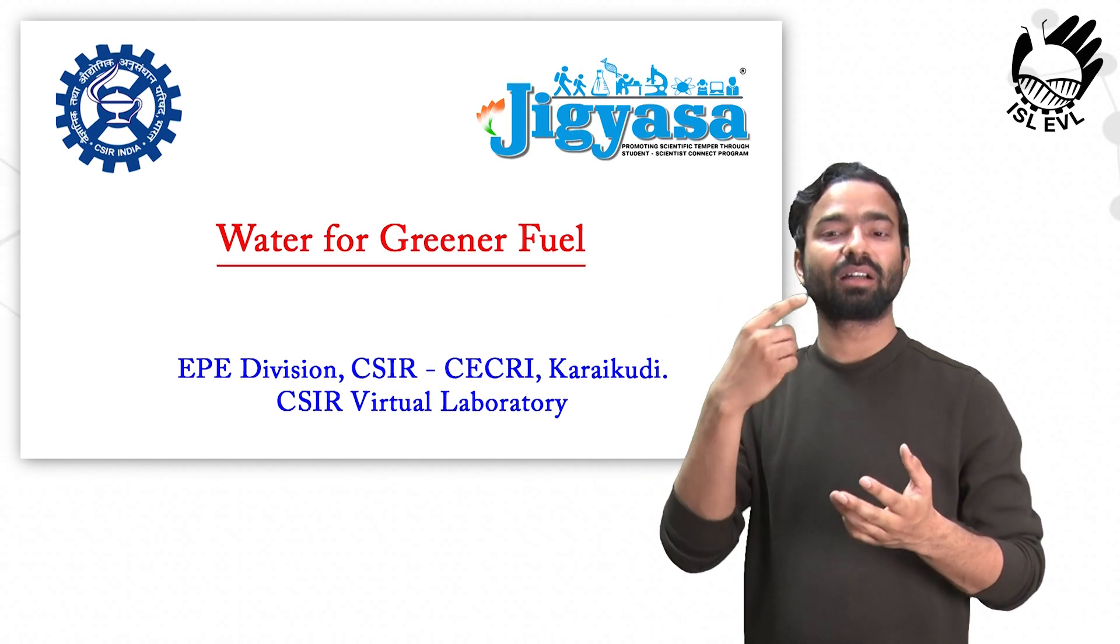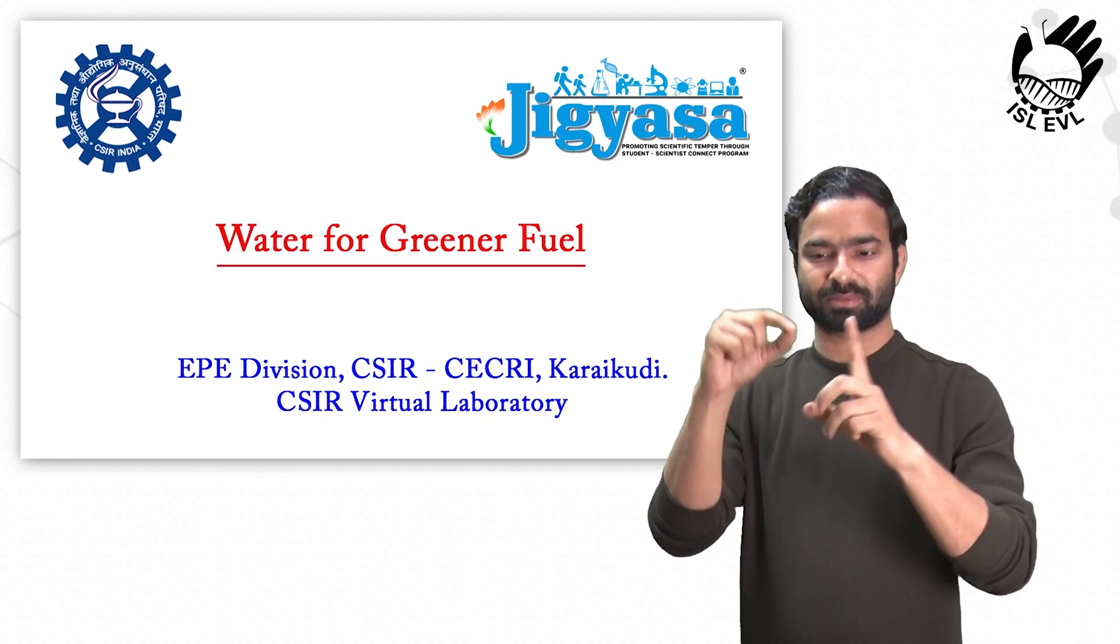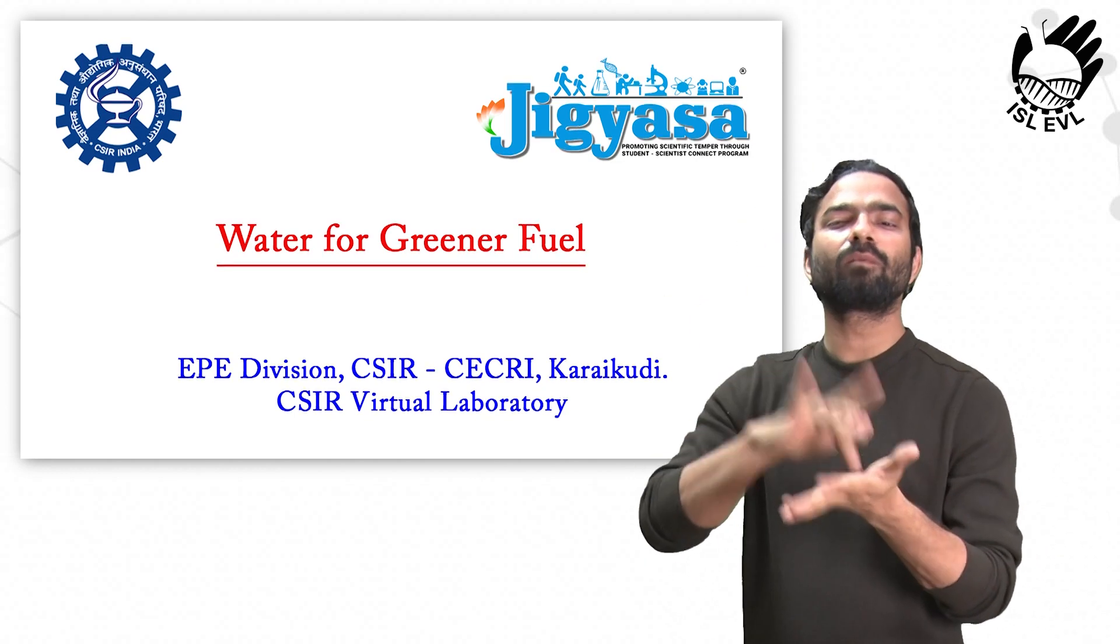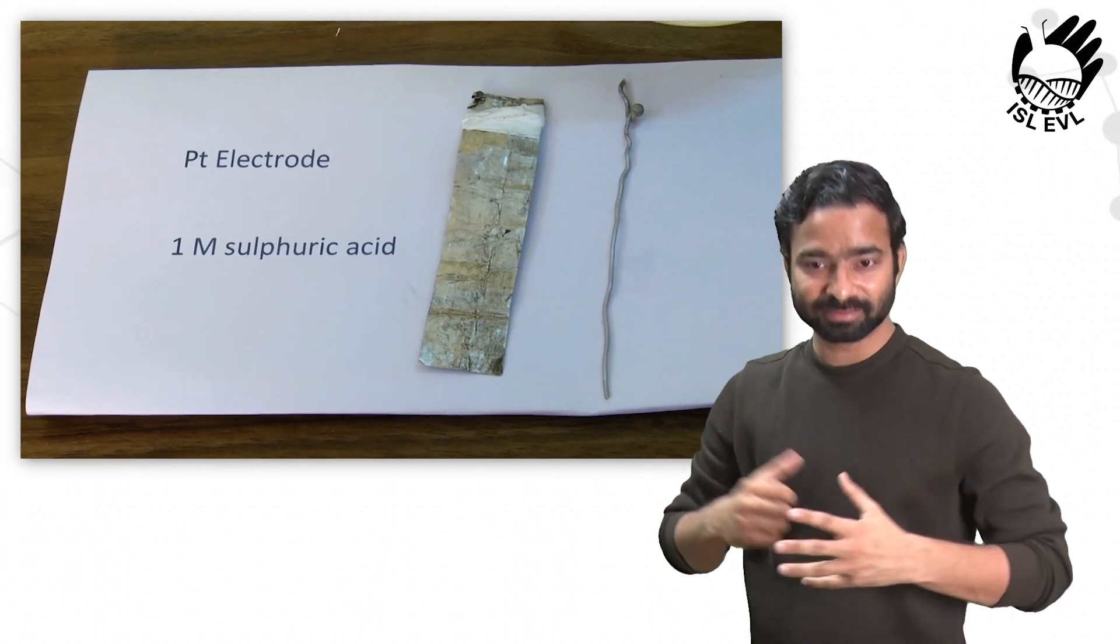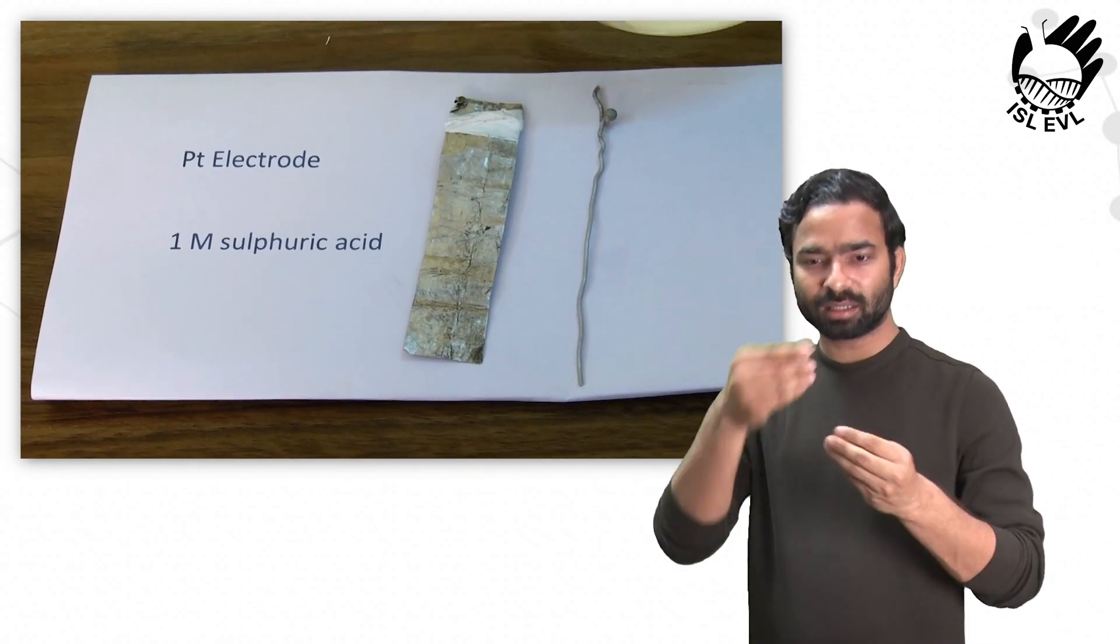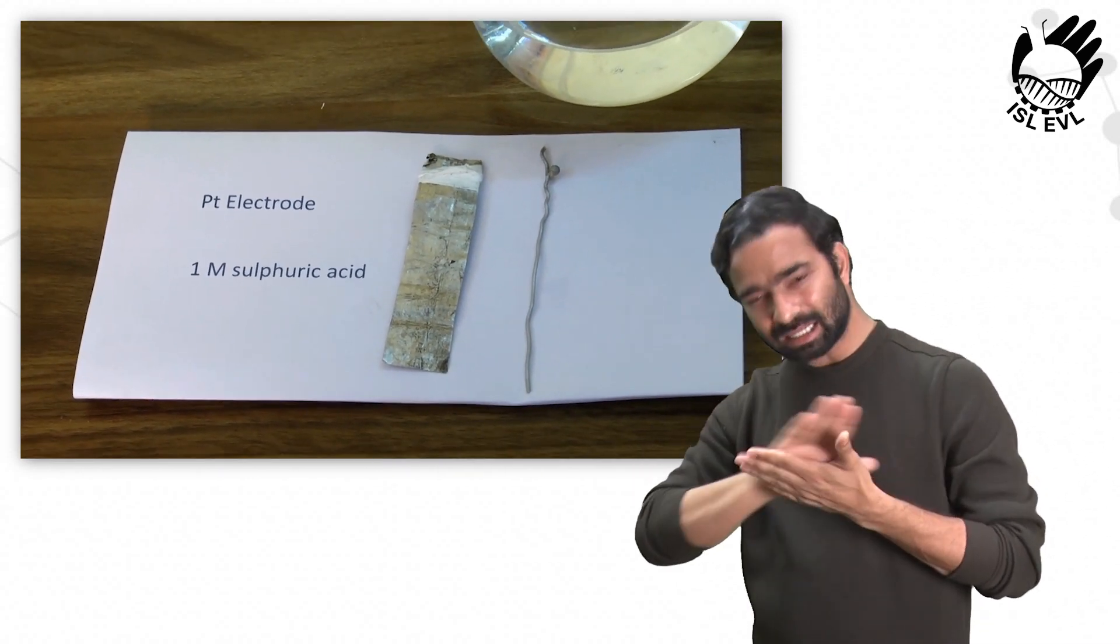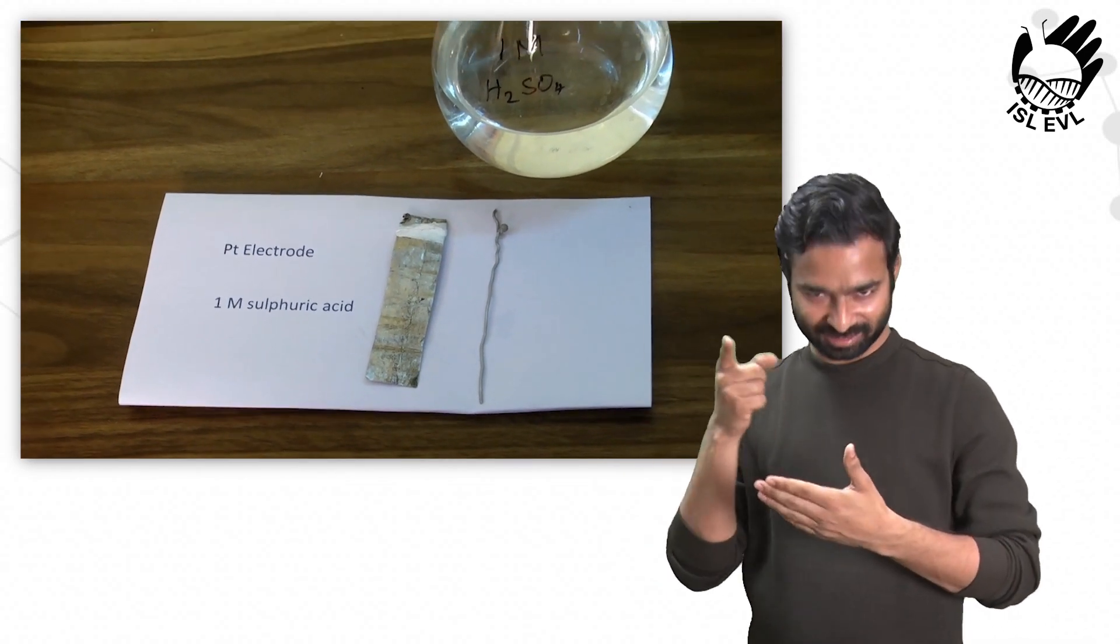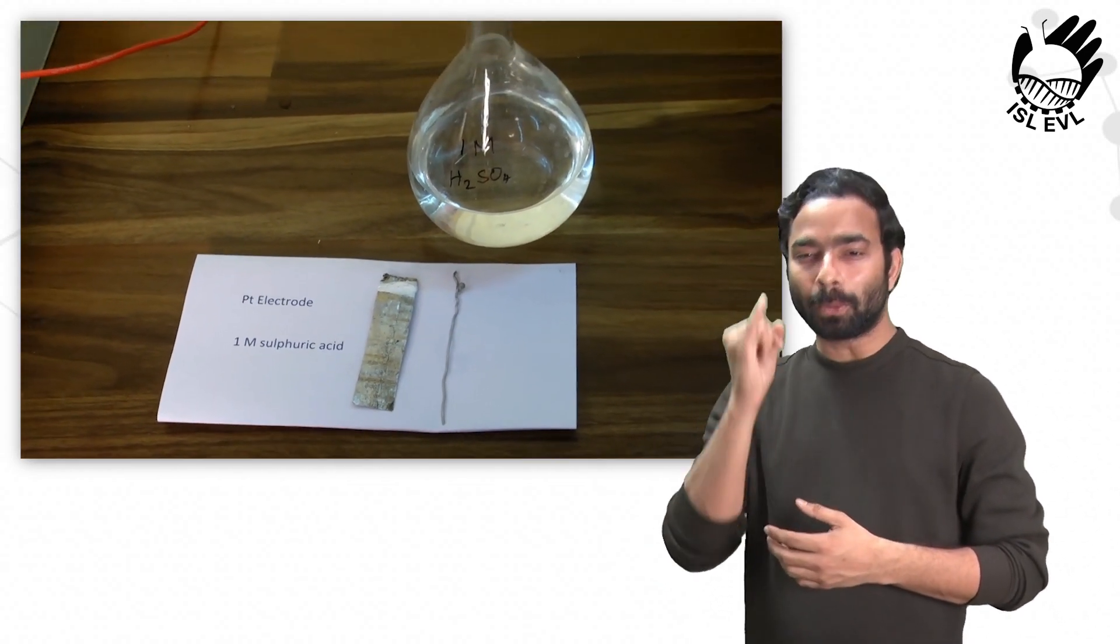This video is presented by Electrochemical Process Engineering Division CSIR Sikri Karikudil. For the electrolysis experiment, we employ platinum wire as anode, platinum foil as cathode, and 1 molar sulfuric acid as the electrolyte.